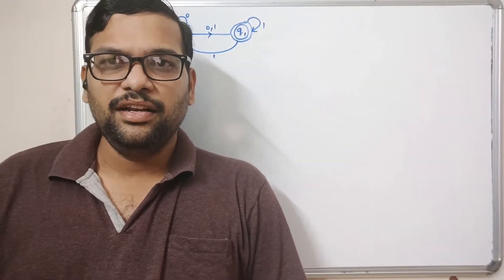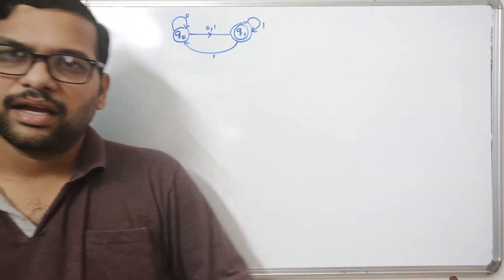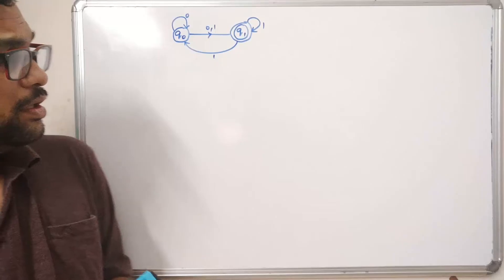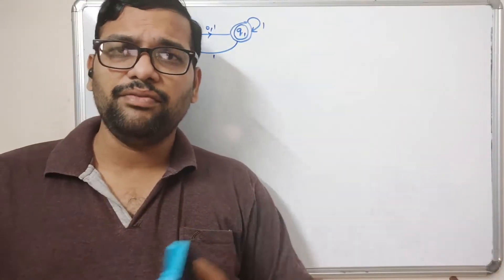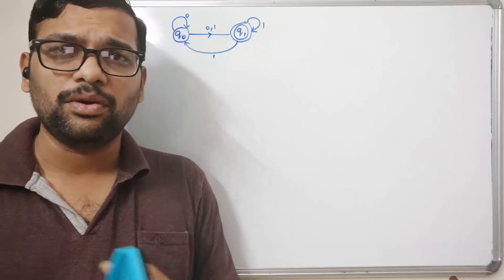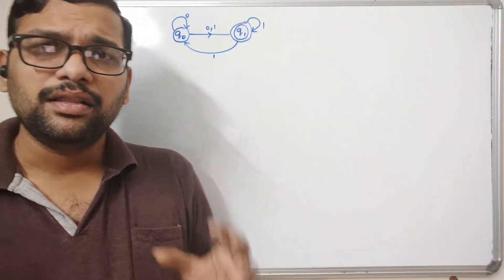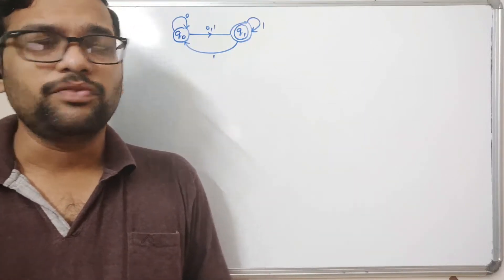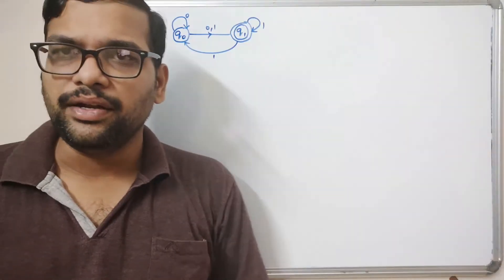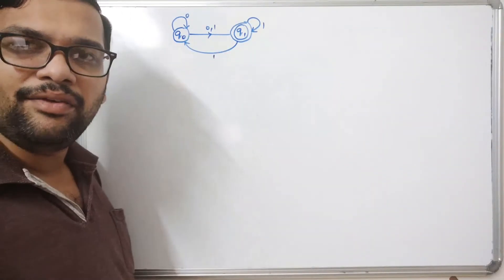Hello friends, welcome back to our channel. In today's session we'll discuss one more topic in automata theory: the conversion of NFA to DFA. We have studied that practical implementation is not possible for NFA, so if you want to go with the practical, we have to convert the NFA to DFA. Consider this NFA that we have to convert to a DFA.